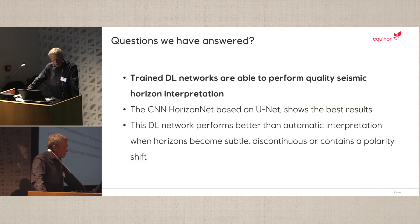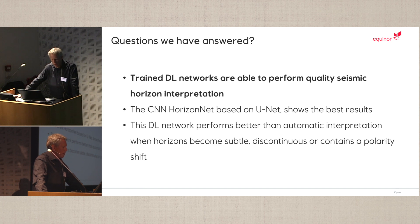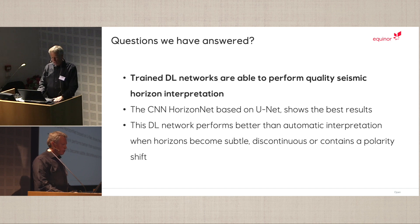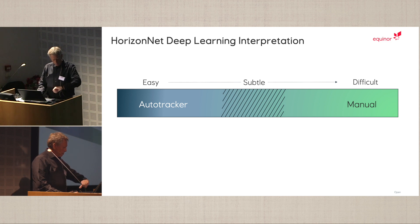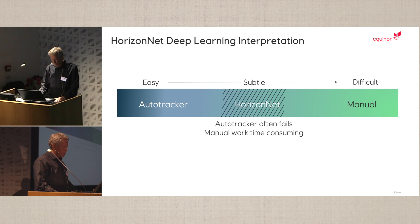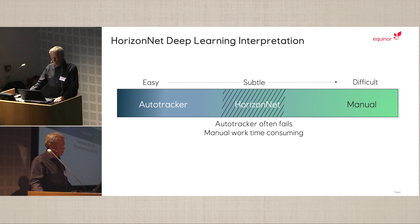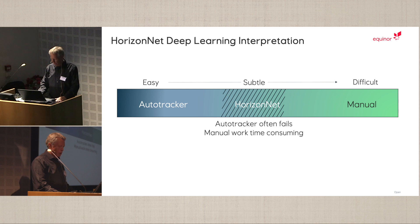The questions we have answered: trained deep learning networks are able to perform quality interpretation, and the CNN HorizonNet based on UNet shows the best results. This deep learning network performs better than automatic interpretation when horizons become subtle, discontinuous, or contain a polarity change. The easy horizons are being interpreted by the auto-tracker, and the difficult ones by the interpreter — HorizonNet can be applied in the area where horizons are subtle, saving the interpreter a lot of time.